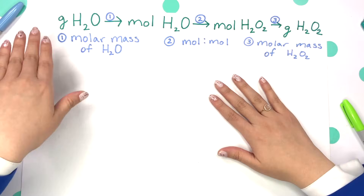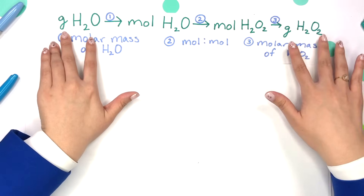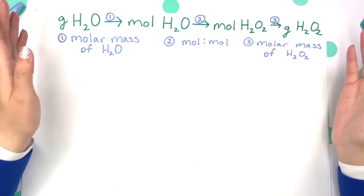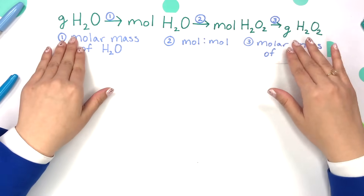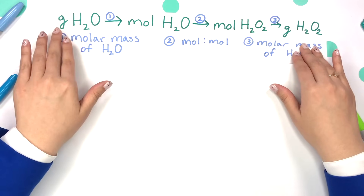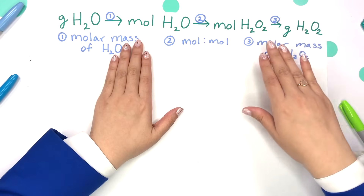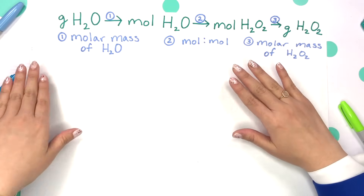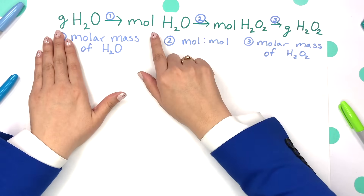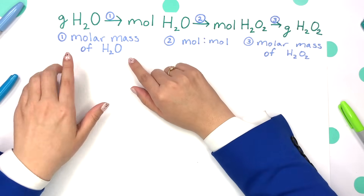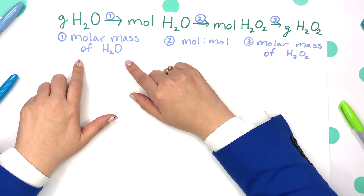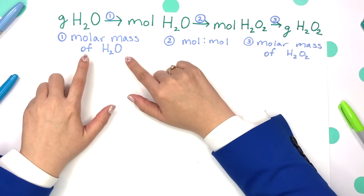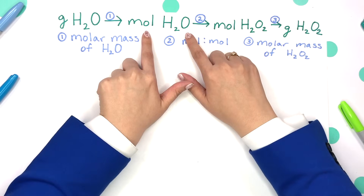Our plan is to go from grams of water to grams of H2O2. We can't just instantly go grams to grams — we have to go from grams to moles and then moles to grams. So our first step is to convert our grams of water to moles of water using our molar mass. Whenever we go from grams to moles, we use the molar mass of that compound.